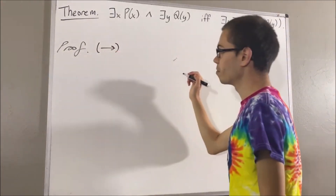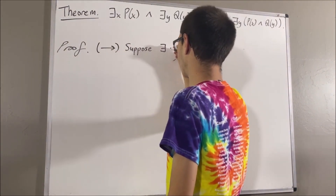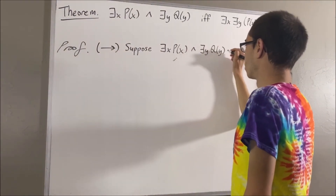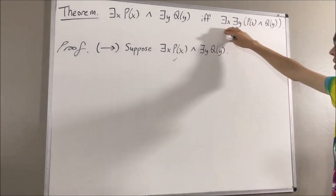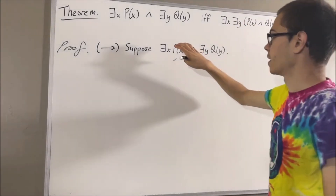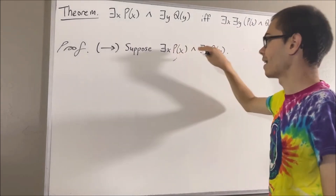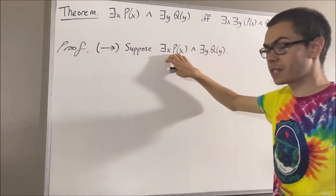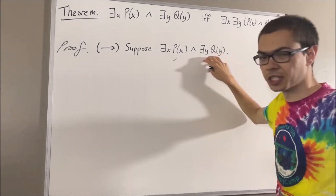To do so, suppose this is true. From here, our whole goal is to show that this is true. Now, since there exists an x such that p of x, and there exists a y such that q of y, this means this is true, and also this is true.